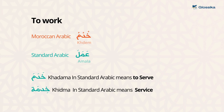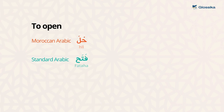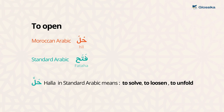So as you can see, the two words are actually very close to each other in meaning. Another example would be the verb to open — hill. In standard Arabic, the verb to open is fataha. But halla in standard Arabic means to solve or to loosen or to unfold. So if you know standard Arabic, these two words are actually very similar to each other, although they are used differently, the meanings are very similar.